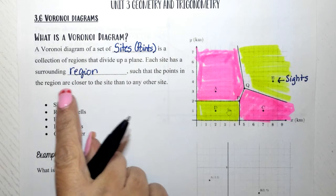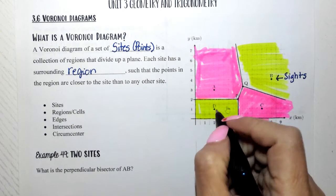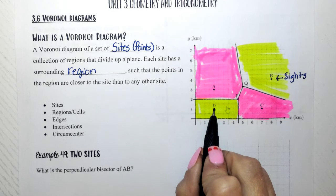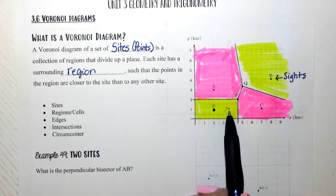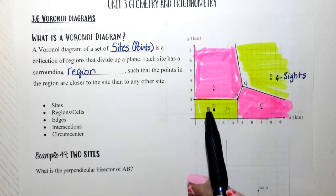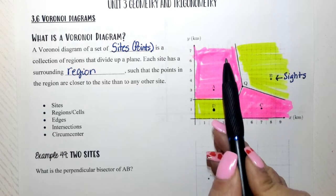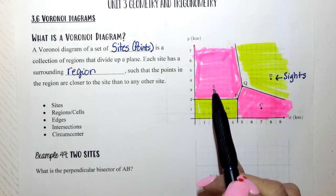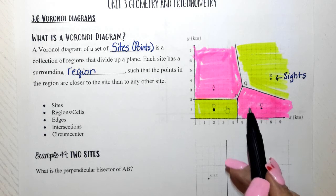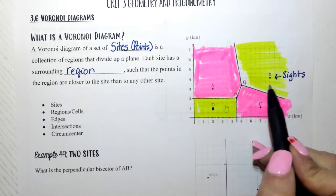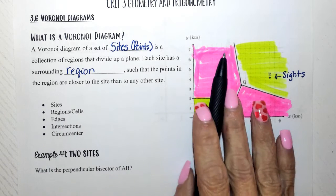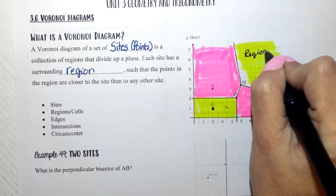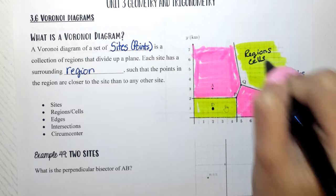Each surrounding region is such that the points in the region are closer to that site than any other site. Every single point inside this yellow area is closer to D. Every single point in this pink area up here is closest to site A. Every single point in this area right here is closest to C, and every single point in this region is closest to B. We did sites, we did regions — we also call these cells, though most of the time we call them regions.